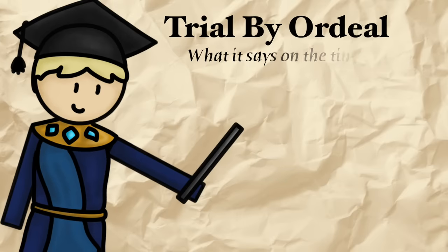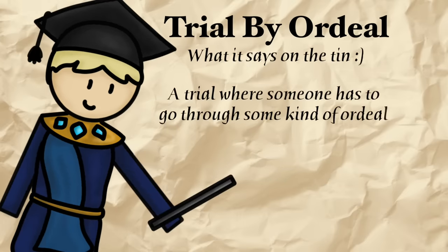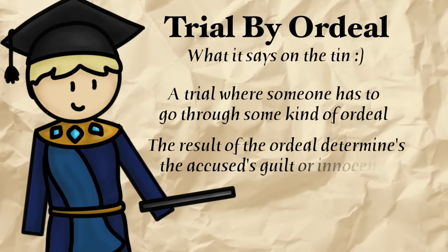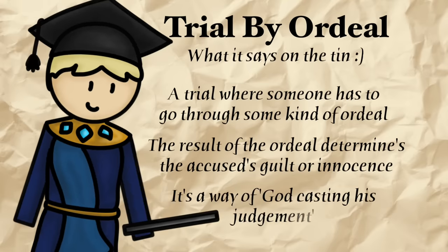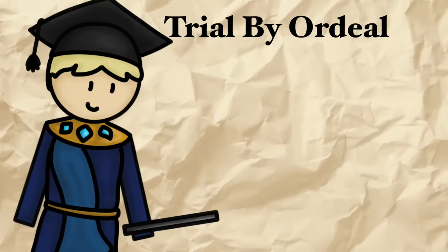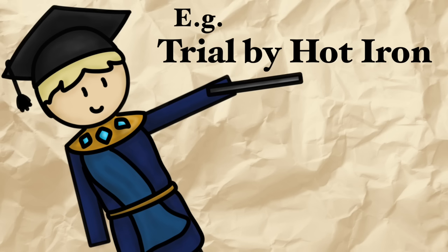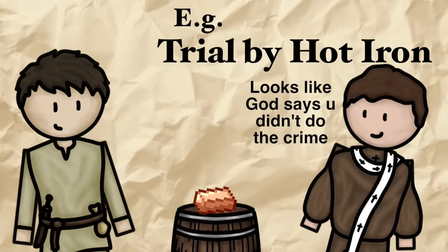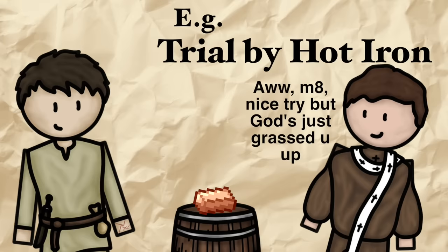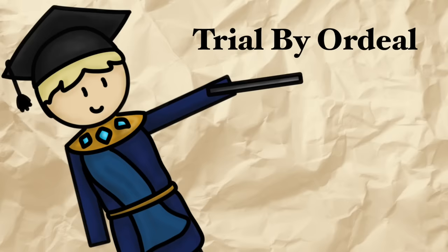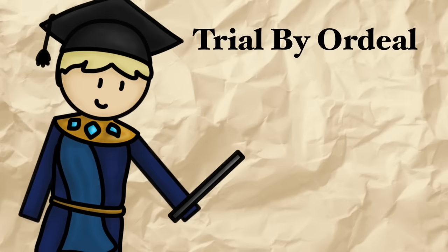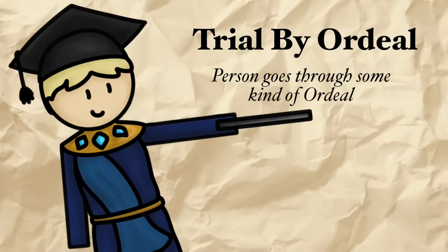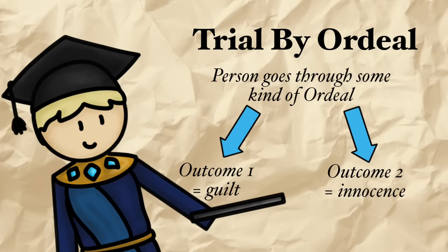A trial by ordeal is a trial where someone has to go through some kind of ordeal, and the result determines their guilt or not — supposedly it's a way of God casting his judgement. An example would be trial by hot iron, where the accused has their hand burnt by hot iron and bandaged. A few days later they check the hand, and if it's healed well then God has judged them not guilty; if it hasn't, then God says they're guilty. Whilst there are all sorts of different ordeals, the overall concept is the same: ordeal happens, one outcome equals God says guilty, the other equals God says innocent.